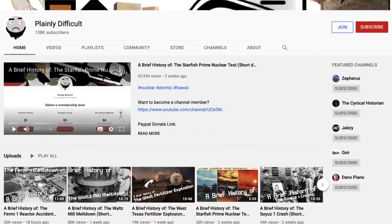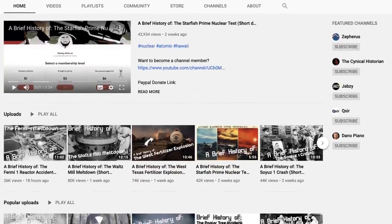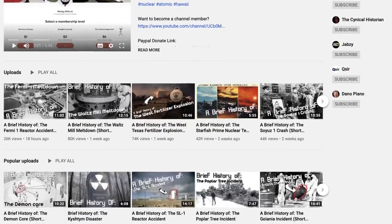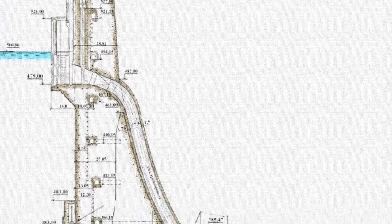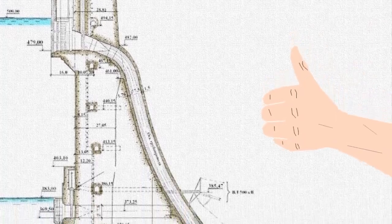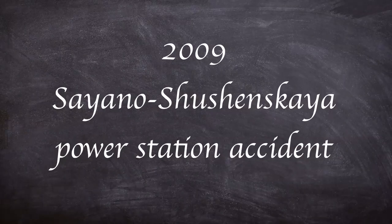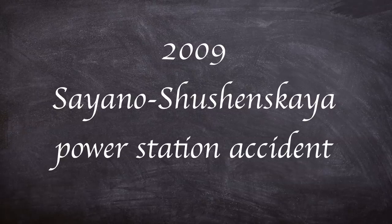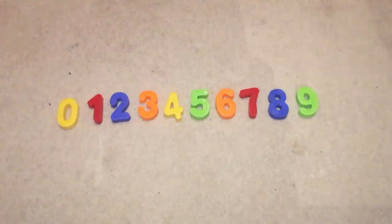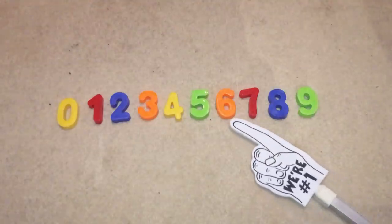Usually this channel doesn't tend to look at non-polluting power sources. However, the disaster we are looking at today took the lives of 74 people and caused millions of rubles worth of damage. So it ticks most of the boxes for a plainly difficult video. Today we are looking at the catastrophic Sayano-Shushenskaya power station accident, and I'm going to rate it about here on my patented plainly difficult disaster scale.